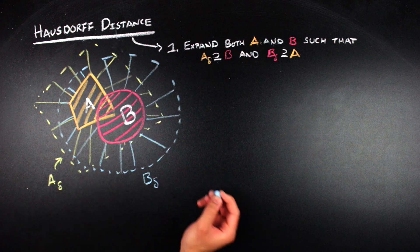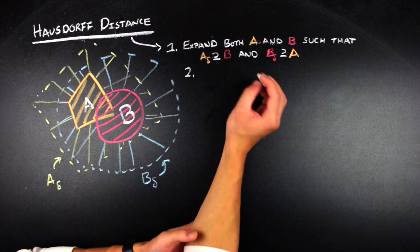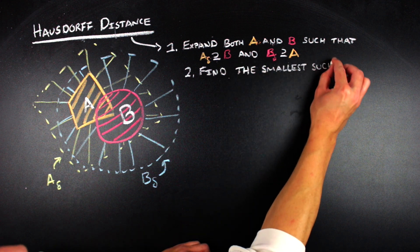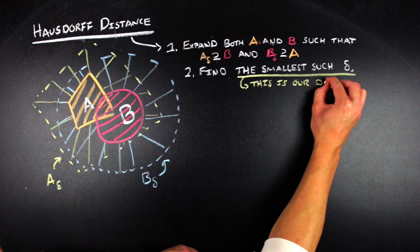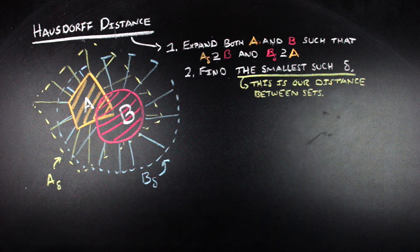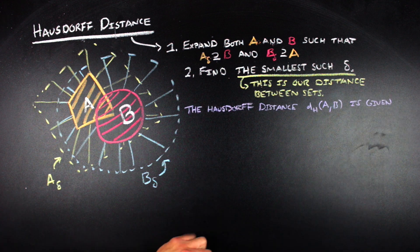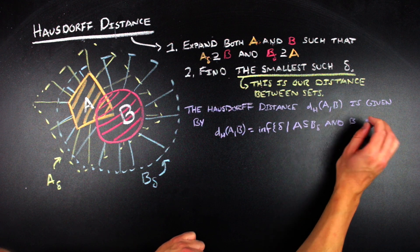Now, after we've done that and found a delta that works, the next question is, well, can we get the best delta? So the second step in this distance-finding process is to shrink delta to be as small as you possibly can make it. So, if you want to be more mathematical about it, we're going to take the infimum of all of these delta, such that A delta contains B and B delta contains A. This is what is going to define Hausdorff distance for us. So, the Hausdorff distance between two sets, A and B, denoted D sub H of A and B, is going to be equal to the infimum of all delta, such that A delta contains B and B delta contains A.